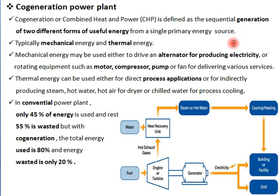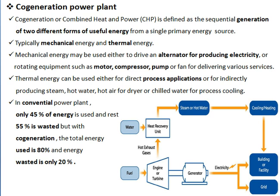If we take the example of a power plant, the steam produced is typically used for mechanical energy and thermal energy. In the boiler, steam is generated which is used to produce both mechanical and thermal energy. We can extract more amount of energy from the steam using the co-generation power plant.